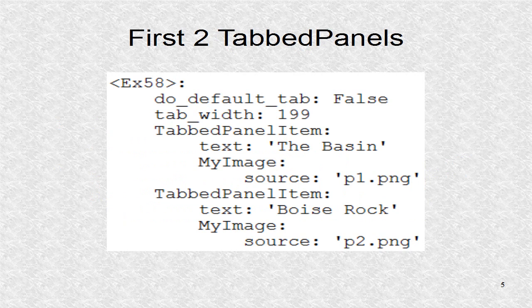The first two screens are the images P1 and P2. There will only be tabs for the panels and their width is 199 pixels.